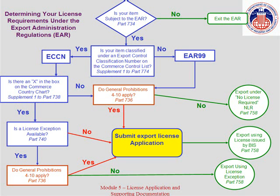In previous modules, we discussed how to determine if an export license is required. If you've determined that your transaction does require an export license, you review Part 748 of the EAR. Part 748 contains all of the requirements for submitting an export license application, from registering for the online license application system to obtaining supporting documentation.